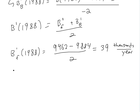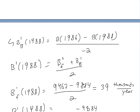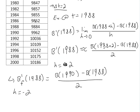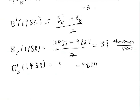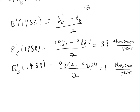Now for B_backward at 1988, we go backwards to 1986. So we have B(1986) minus B(1988) divided by negative 2. Looking at the table, that's 9862 minus 9962, divided by negative 2. This gives us approximately 11,000 per year increase. So the forward gives 39,000 and the backward gives 11,000.